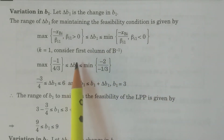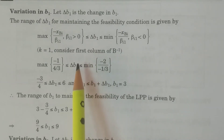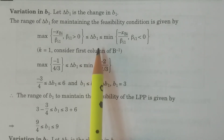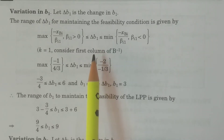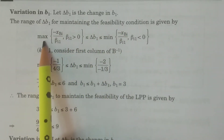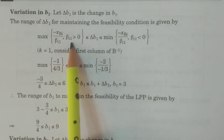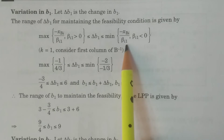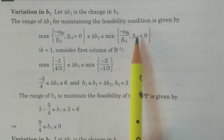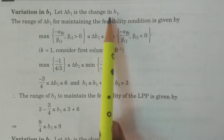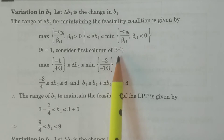The entire theory, as explained previously: if the change in BK is BK plus delta BK, where delta BK is the change — the additional amount added to BK — then the range of delta BK for maintaining the feasibility is given by: maximum of (-XBi / beta_iK) for beta_iK > 0, less than or equal to delta BK, less than or equal to minimum of (-XBi / beta_iK) for beta_iK < 0. For delta B1, K equals 1, so consider the first column of B inverse.